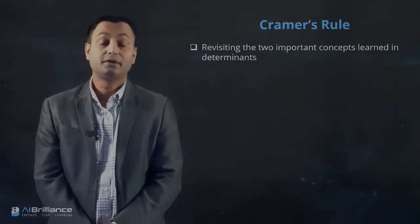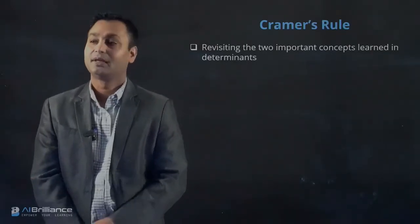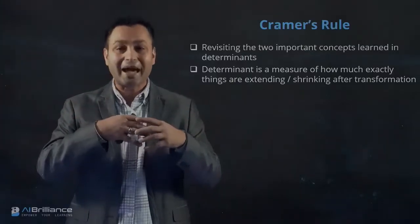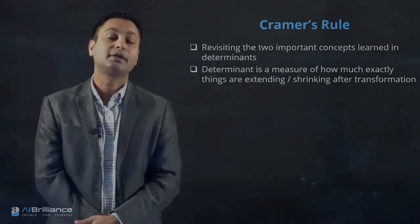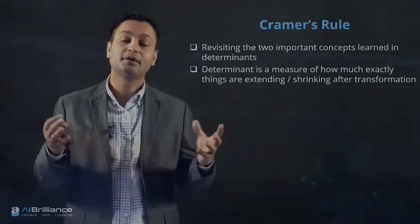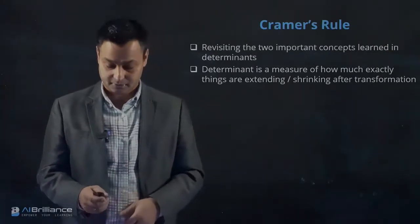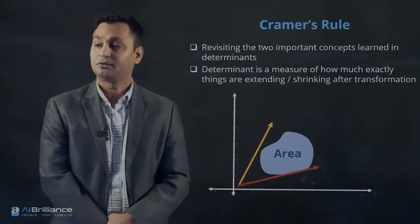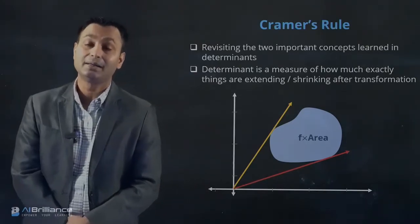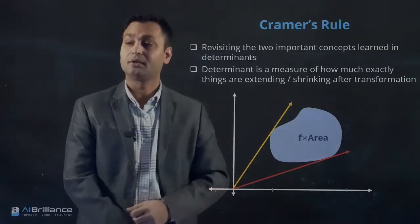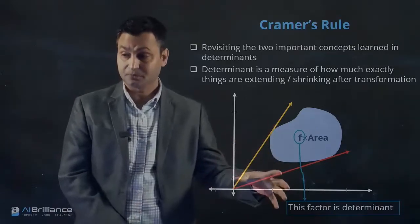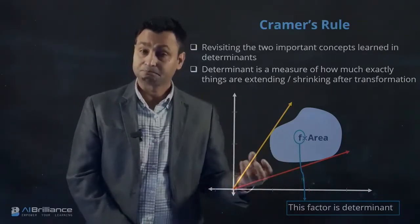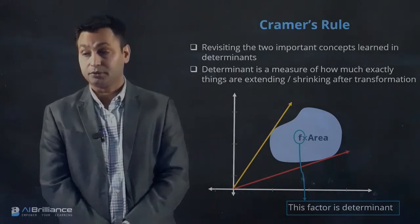Let's revisit what we discussed about determinants: a determinant essentially measures how much things are extending or shrinking after transformation. Recapping that figure — if you have two original vectors enclosing an area and you apply a transformation matrix, that area may extend or shrink. The factor by which the area increases or shrinks is captured and measured by the determinant. That is the geometrical meaning of the determinant.